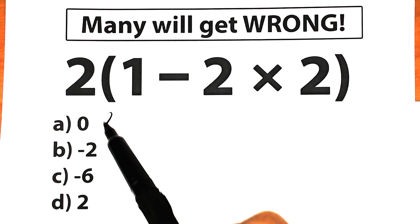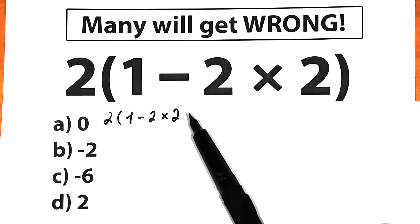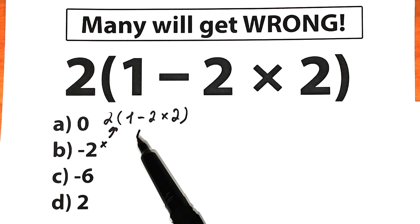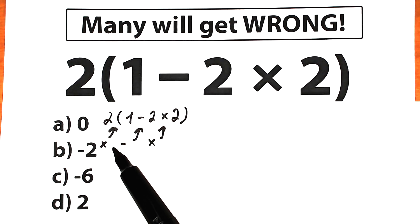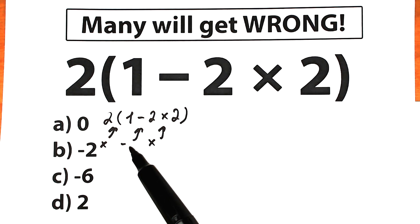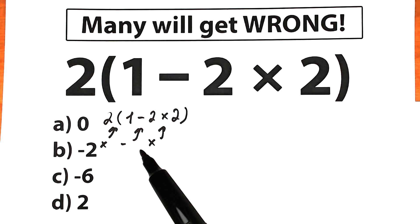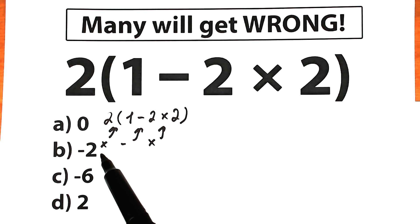Here's our challenge today: we have 2 times (1 minus 2 times 2). As you can see, we have a lot of math operations — we have multiplication, subtraction, and multiplication. One part of students starts with the multiplication here, another part starts with the subtraction. A lot of students argue with each other about that. Because we should know what is the correct order — wherever order of operation we select, it's going to create a different answer.